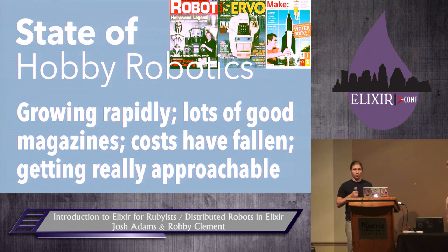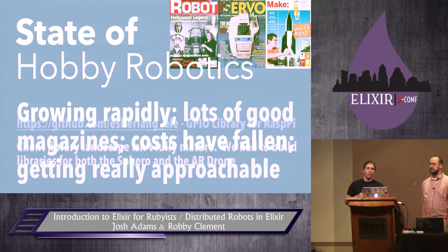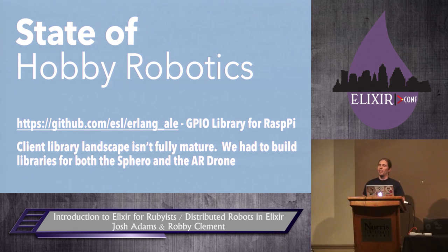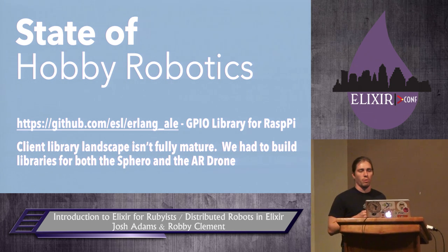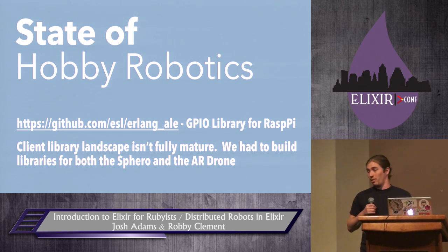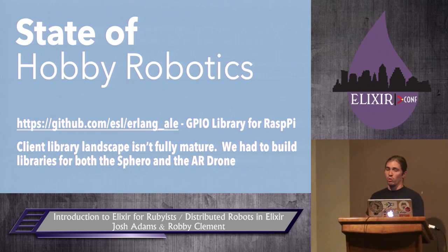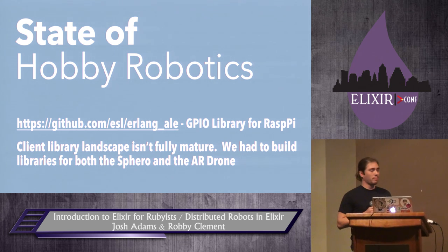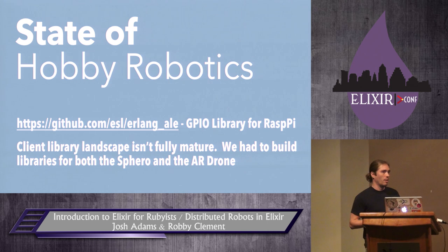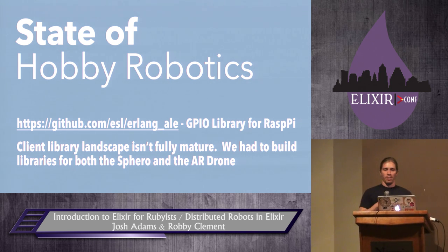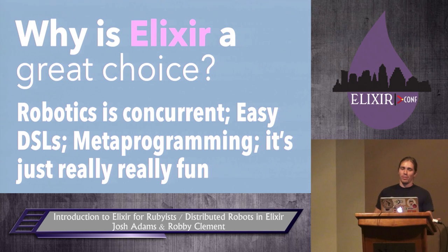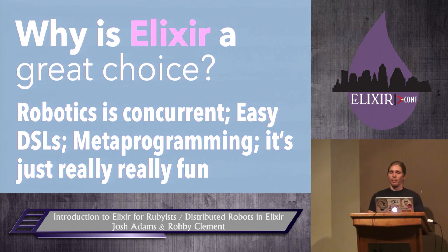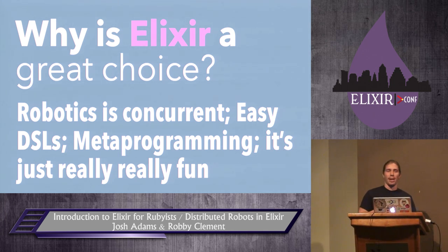There aren't as many client libraries out there for various robotics tools in Elixir as other languages have. For instance, we had to write the libraries for the Sphero and the AR Drone before we could even play with them. Why is Elixir a good choice for this? We have concurrency, DSLs, metaprogramming, and you can have fun writing your robots, not just playing with them.